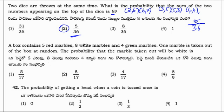A box contains 5 red marbles, 8 white marbles, and 4 green marbles. One marble is taken from the box at random. The probability that the marble taken out will be white: white marbles are 8, total balls are 5+8+4 = 17. Out of 17, white colored balls are 8. So 8/17, which is option 2.